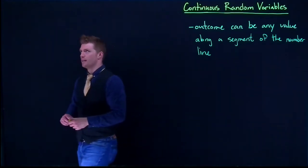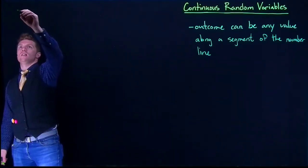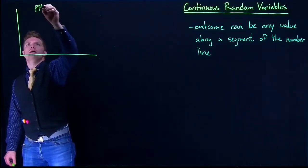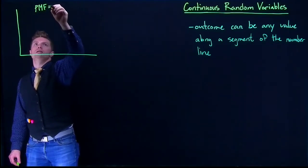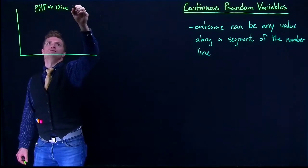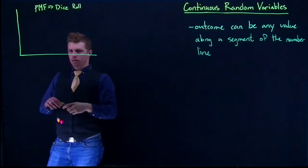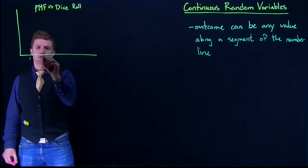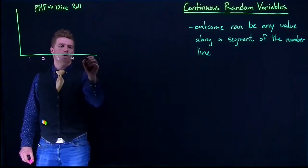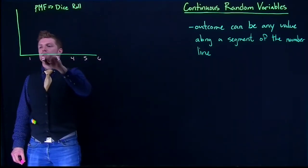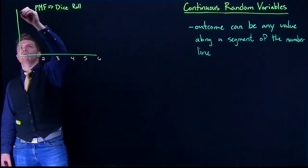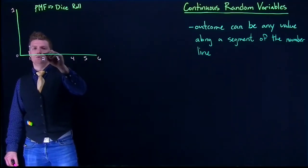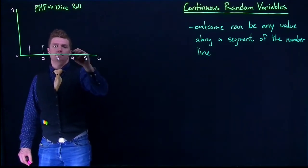Let's talk about rolling a dice, because it's simple and hopefully familiar. So if we're drawing our PMF for a dice roll, we know that all possible outcomes are 1, 2, 3, 4, 5, and 6. Our PMF goes from 0 to 1, and we know that each outcome is equal to the value of 1/6.